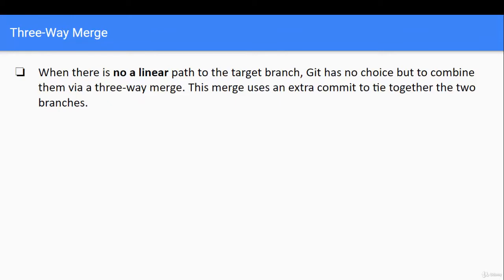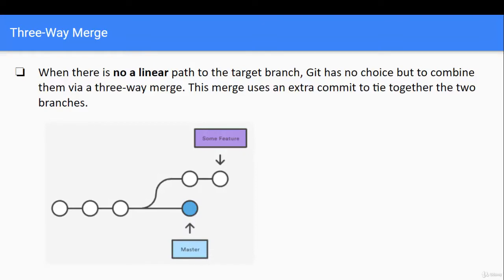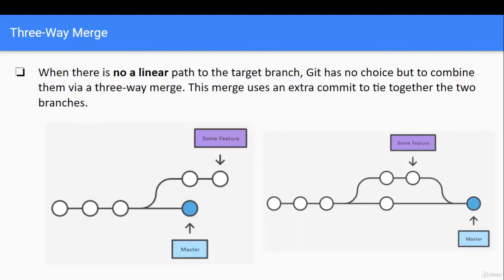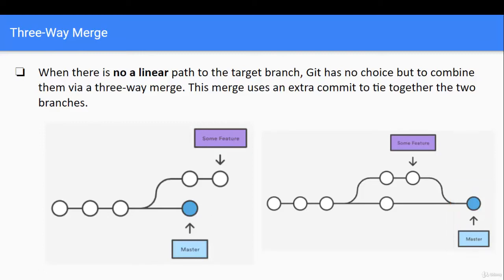When there is no linear path to the target branch, git has no choice but to combine them via a three-way merge. This merge uses an extra commit to tie together the two branches. Here we can see the master branch, from which the feature branch was created, but in the meantime master also had some developments. So the path is no longer linear — there is a divergence, and fast forward won't work. If we merge, there would be an additional commit to which the master would be pointing. So this is a three-way merge.